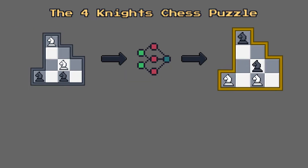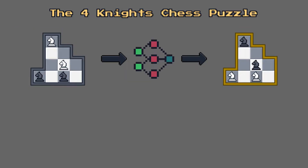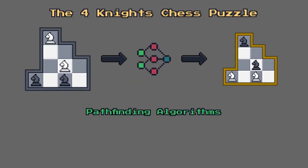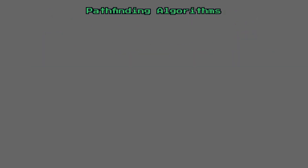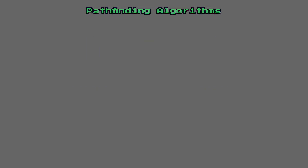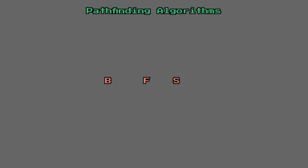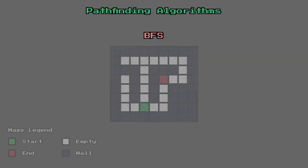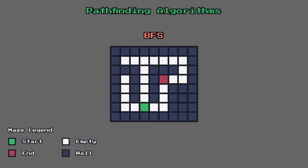So how would an AI go about solving this puzzle? Two words: pathfinding algorithms. They're algorithms that look for a path between two nodes or positions, or in our case chess board arrangements. For our purposes, we'll use an algorithm called Breadth First Search, or BFS for short. To show how this algorithm works, I'll use a simple maze. We need to get from the green tile to the red tile, ideally using the shortest possible path.